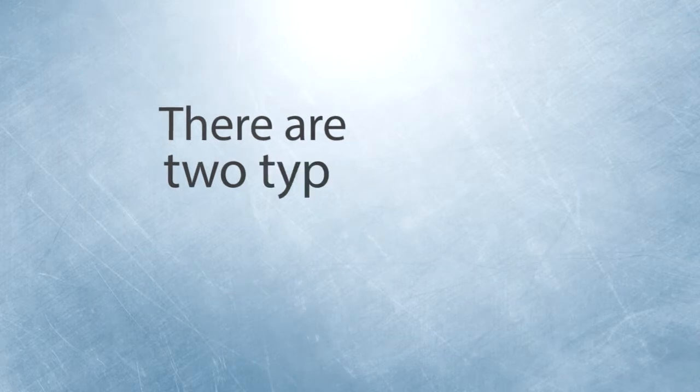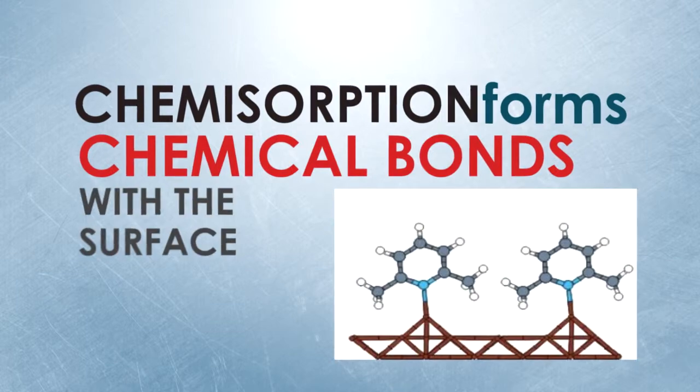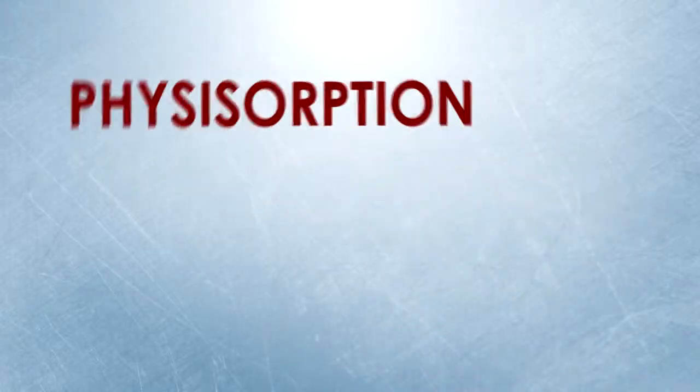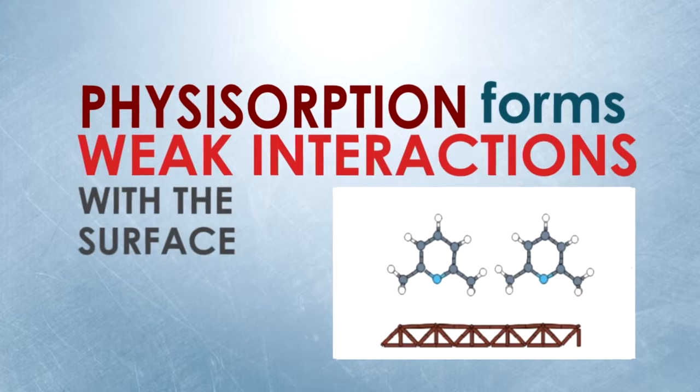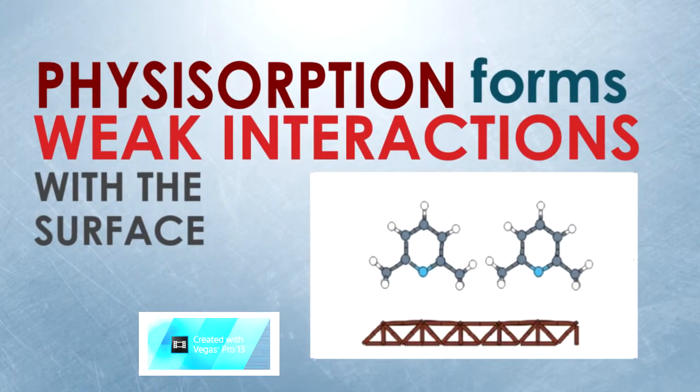There are two types of adsorption: physisorption and chemisorption. Chemisorption forms chemical bonds with the surface where it physically touches. Physisorption forms weak interactions with the surface using van der Waals bonds but has a larger range.